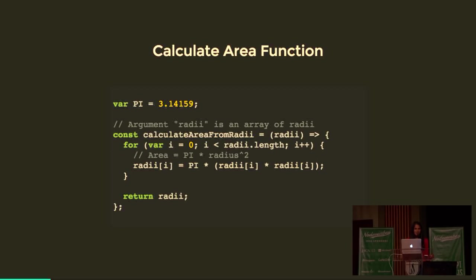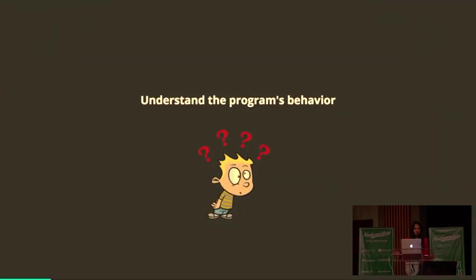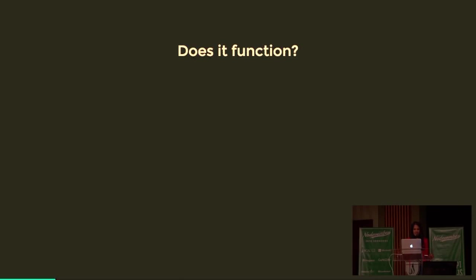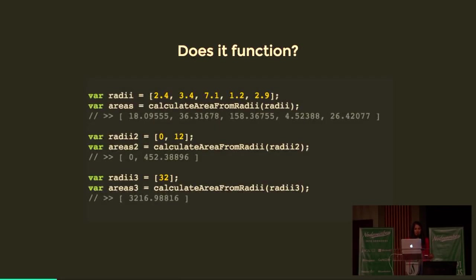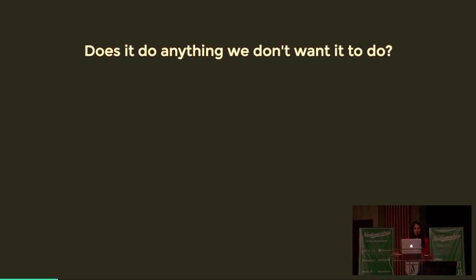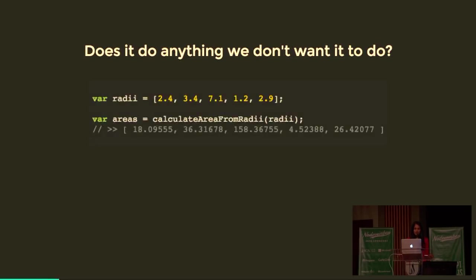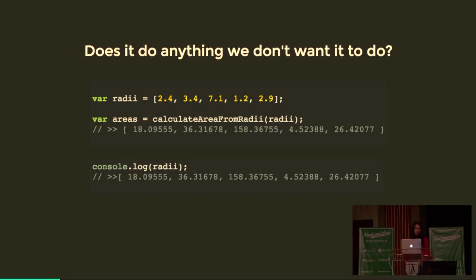I'm going to start with an example — a calculate area function you'll see a lot throughout the presentation. It takes a bunch of radii, iterates over them, calculates the area, and returns the areas. As good programmers, let's understand the program's behavior. First question: does it function? We pass a bunch of radii and check the output looks correct — it looks fine. But if you log the original array of radii, we see it got mutated. It's now the areas array, no longer the radii. That's not good — what if we want the radii to calculate the diameter later?